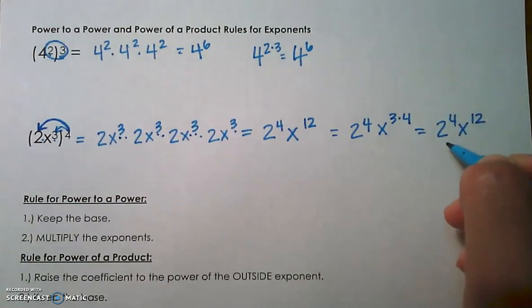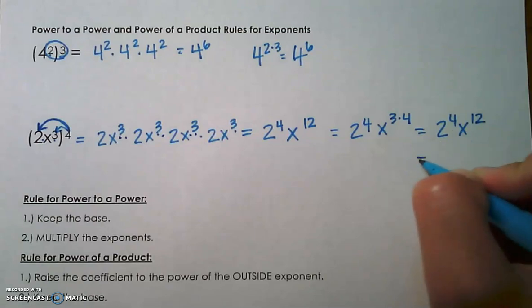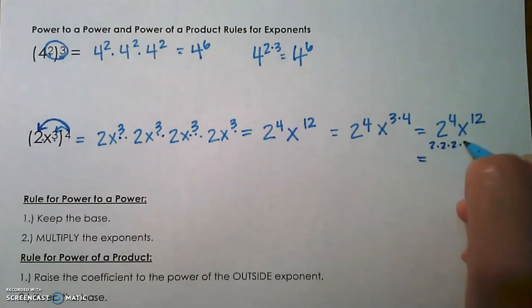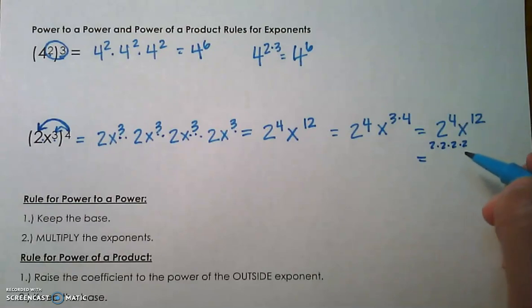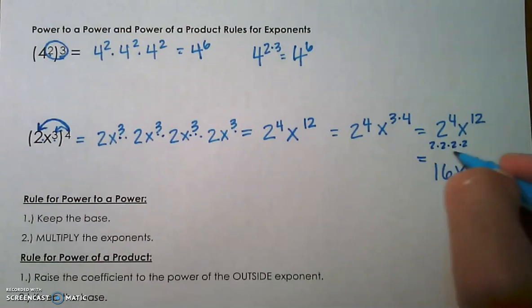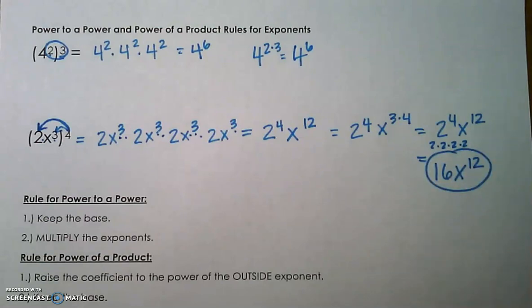Your teachers may ask you to multiply out that 2 to the 4th power. That is going to give us 16, because 2 to the 4th is 2 times 2 times 2 times 2 — not 2 times 4. So that's going to be 16x to the 12th as your final answer on that one.